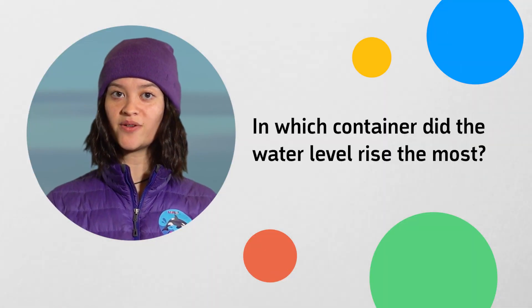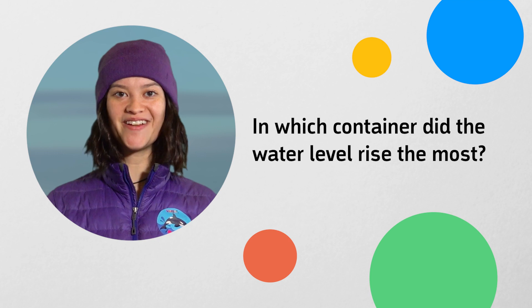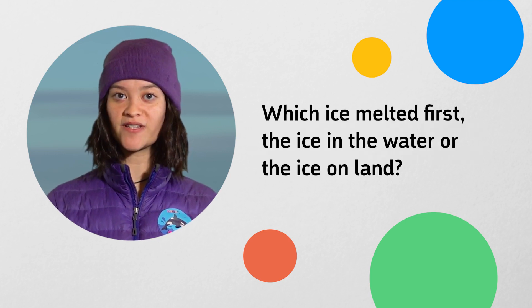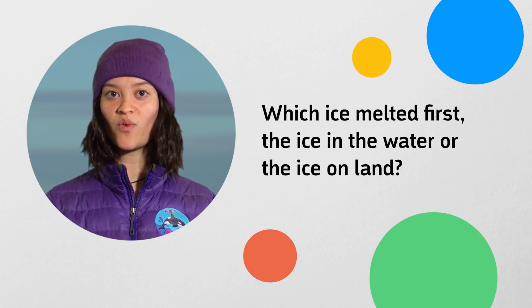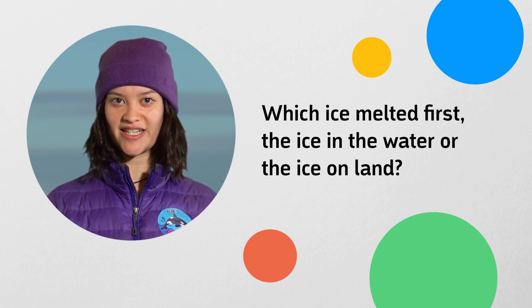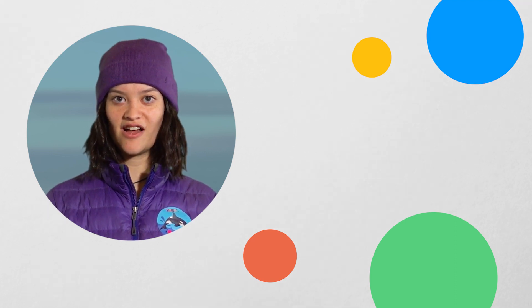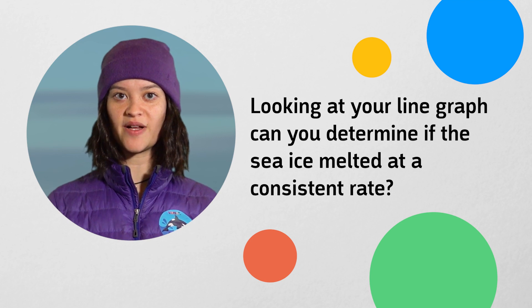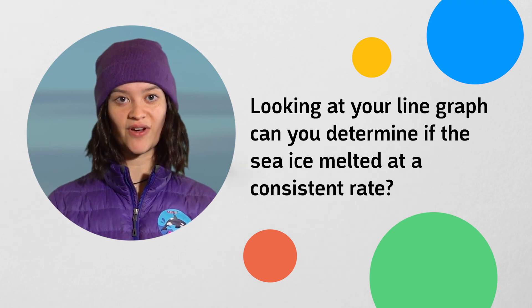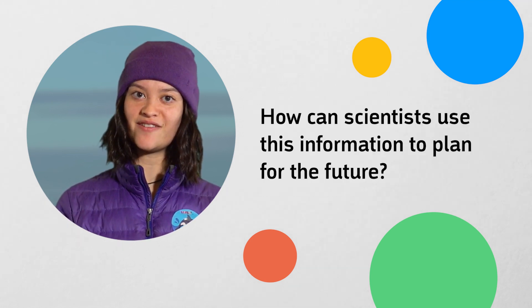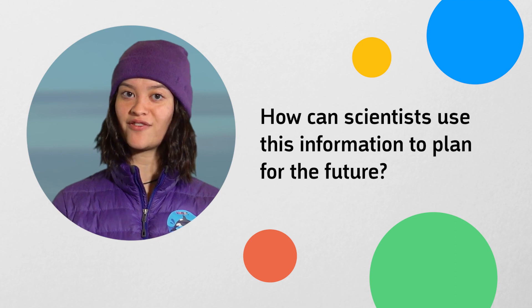In which container did the water level rise the most? Why do you think this was? Which ice melted first — the ice in the water or the ice on land? Was this what you predicted? Looking at your line graph, can you determine if the sea ice melted at a consistent rate? And how can scientists use this information to plan for the future?